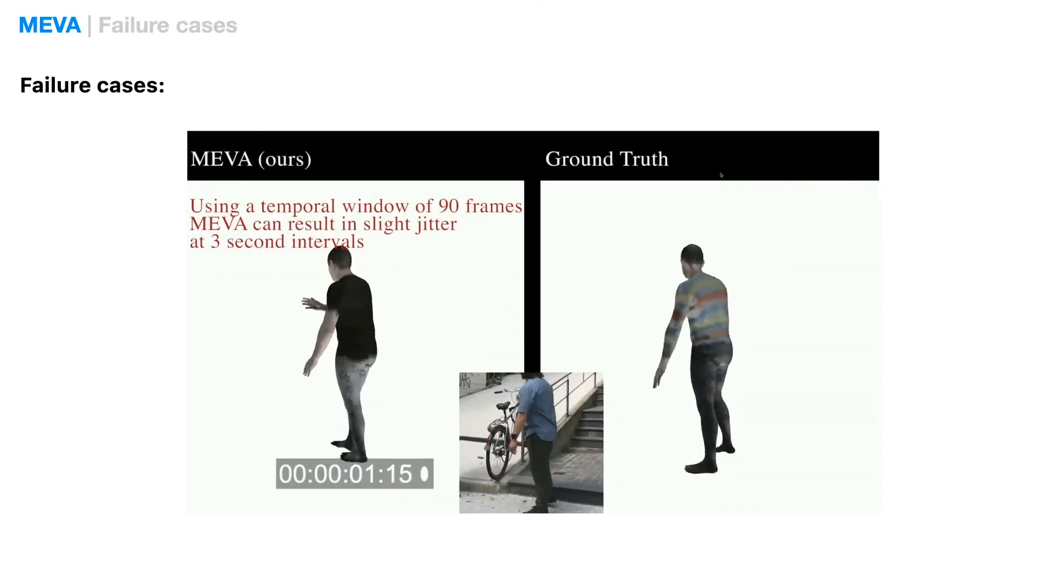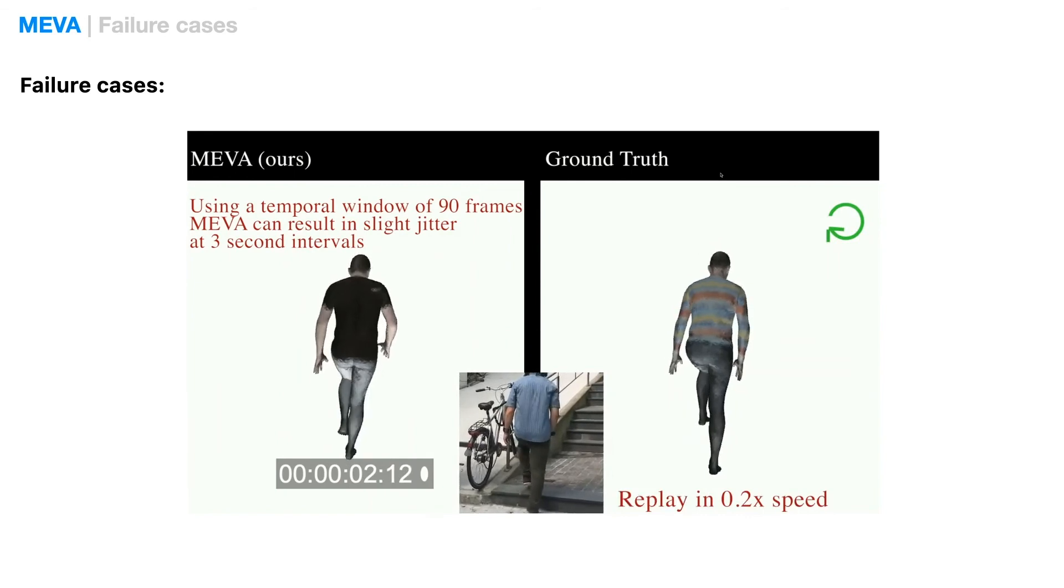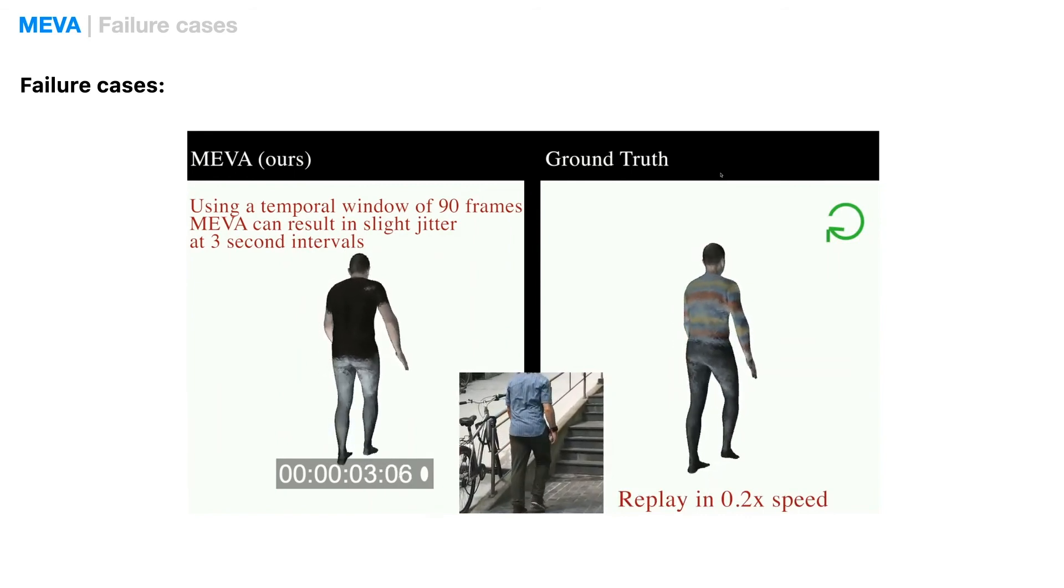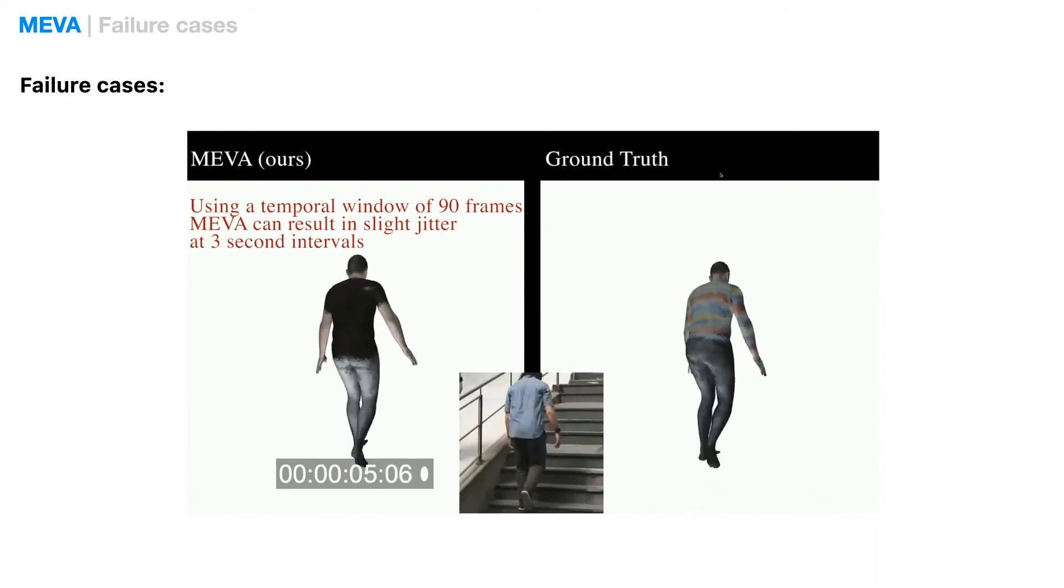Here we show some failure cases. MEVA processes videos using a sliding window. Input video sequences are split into chunks of 90 frames for processing. Inconsistency can sometimes be observed at a 90-frame interval.